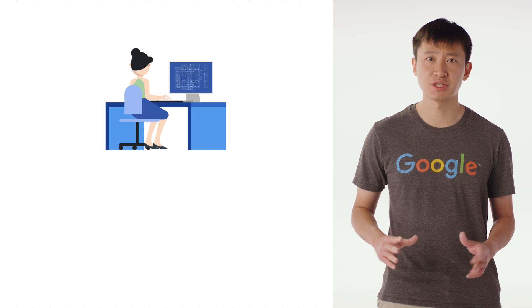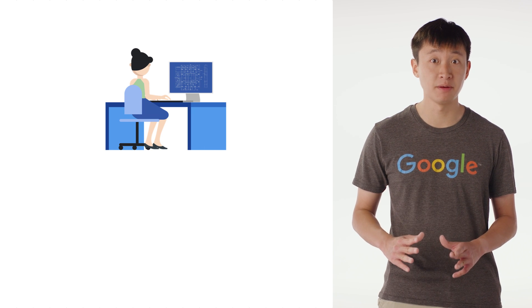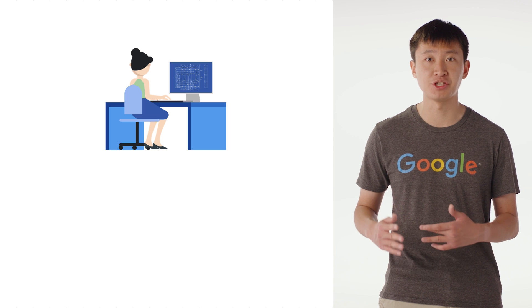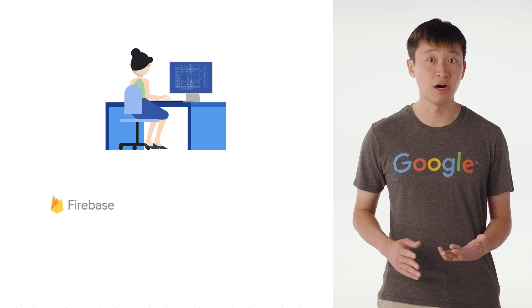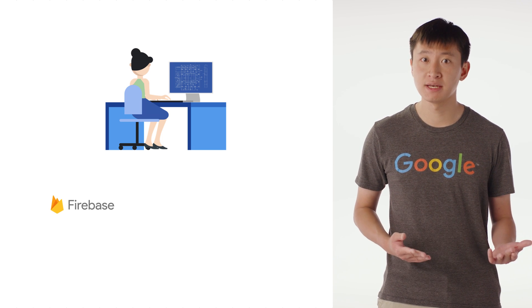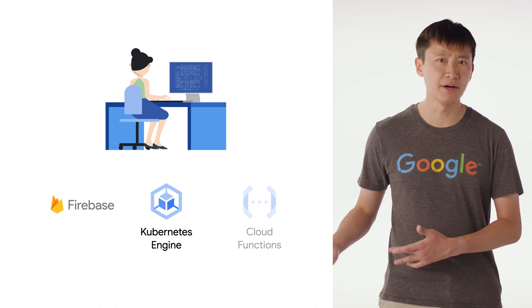So there you have it — an overview of several different ways you can run code on Google Cloud, ranging from highly managed to highly customizable. Although these compute products serve different use cases, many developers use several of them together to support an overall application architecture. For example, a game developer may host a database on Firebase, a game server on Kubernetes Engine, and an email integration on Cloud Functions. Make sure to check out other episodes of Google Cloud Essentials, where we cover topics like storing data on Google Cloud, the Google Cloud Console, the Google Cloud SDK, key use cases, and more. I can't wait to see what you build with Google Cloud.